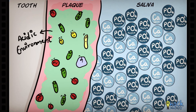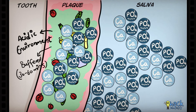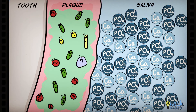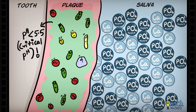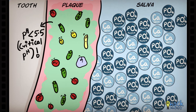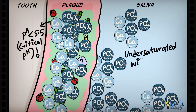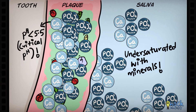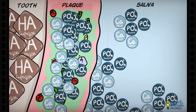An increase in the acidic environment locally is usually buffered and neutralized within 30-60 minutes by calcium and phosphate ions in the saliva. The problem arises when the pH drops to 5.5 or below. In order to buffer the acidic environment, minerals from the saliva keep moving to the tooth-plaque interface. However, saliva starts to get undersaturated with minerals, and to meet the mineral demand in the saliva, hydroxyapatite crystals from the tooth start to disintegrate and move to the saliva.